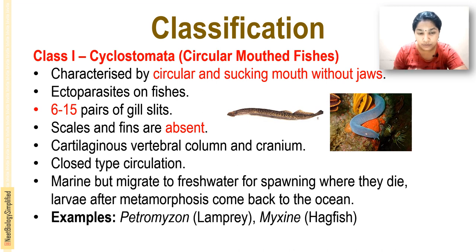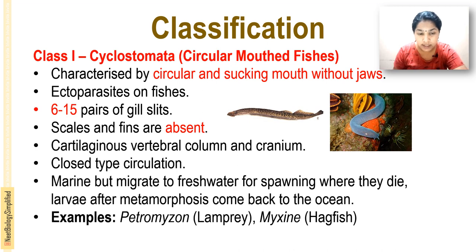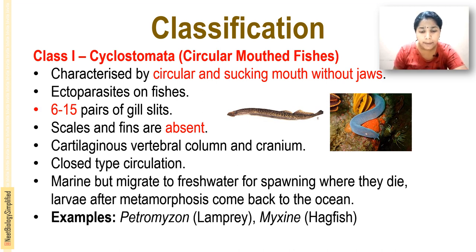Cyclostomata are circular mouth fishes characterized by a circular and sucking mouth without jaws. They are ectoparasites on fishes, contain 6 to 15 pairs of gill slits, and scales and fins are absent. They have a cartilaginous vertebral column and cranium, closed circulation, are marine but migrate to fresh water for spawning, and larvae return to the ocean after metamorphosis. Examples: Petromyzon (lamprey) and Myxine (hagfish).